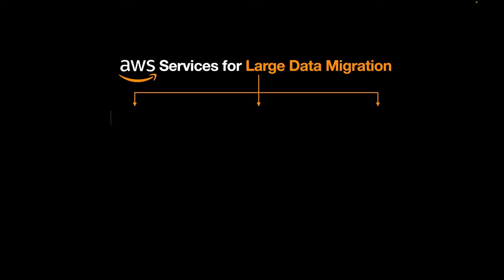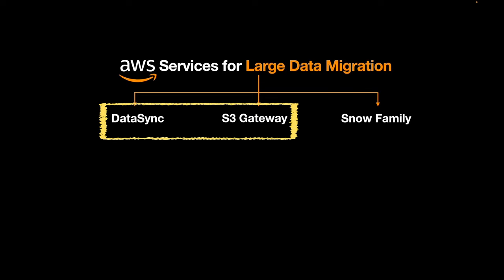Enough about the definition. Let's talk about the recommended choices if you have large data and want to migrate it to or from the cloud. First is DataSync, the second recommended service is S3 Gateway, and the third is the AWS Snow Family, which has various devices under it. These are not the only migration services — there are others like Transfer Family and Application Migration Services — but for large data, these three are the way to go. DataSync and S3 Gateway can also be used for smaller data, but they are recommended for large data as well.